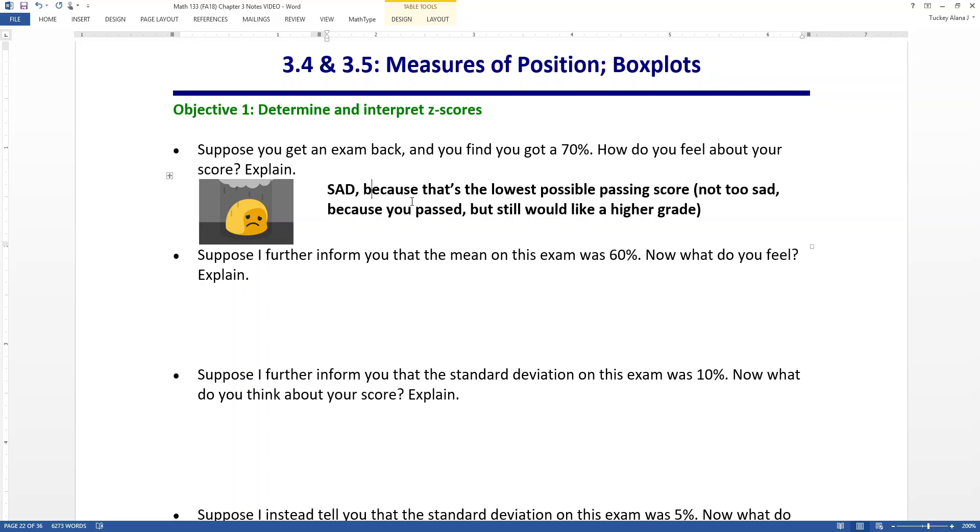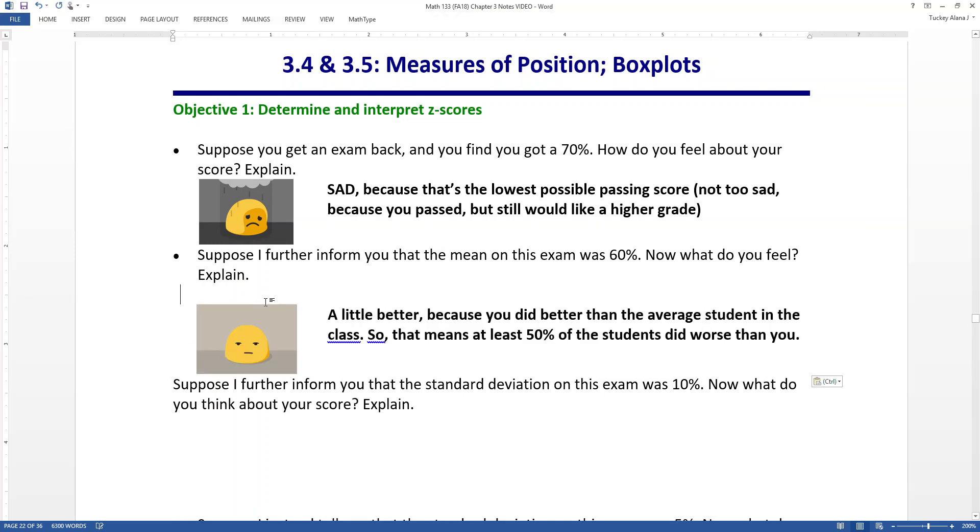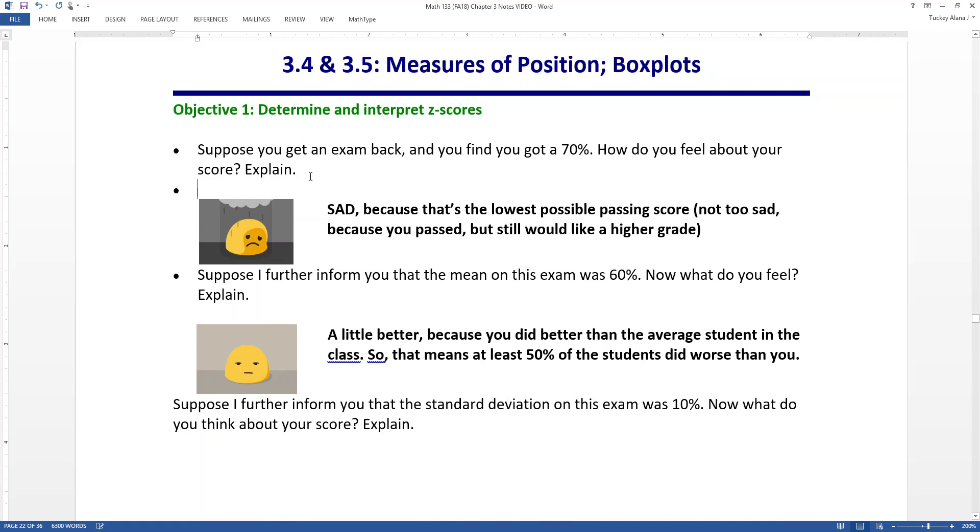Now, suppose I say, hey yeah, you got a 70, but the mean on this exam was 60. Now what do you think? You're thinking, all right, you know, I know that I did better than about half the class, roughly. So I mean, roughly 50% of the students did worse than me, maybe even a little bit more. So now I'm not feeling so bad about my grade.